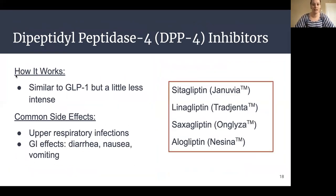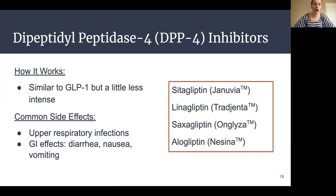Our next class is the dipeptidyl peptidase-4, or DPP-4 inhibitors. These are medications like Januvia, Tradjenta, Onglyza, and Nesina. They work similarly to the GLP-1 agents we just talked about, but a little less intense, and this is an oral agent — a pill taken once a day. Common side effects include upper respiratory infections and GI effects like diarrhea, nausea, or vomiting.